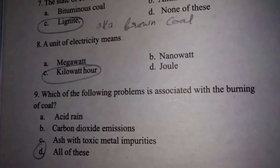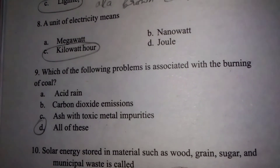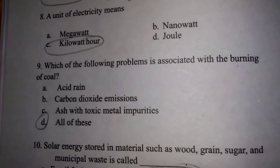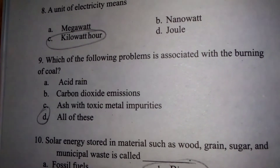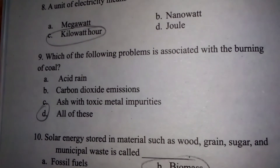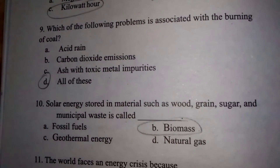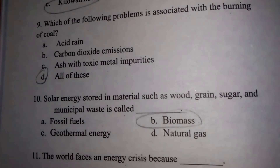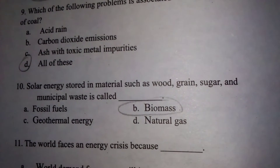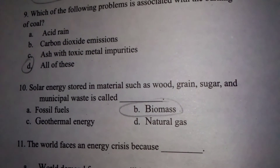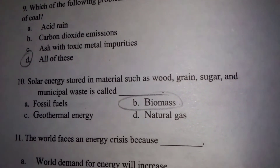Which of the following problems are associated with burning coal? Carbon dioxide emissions, release of toxic metal impurities, and acid rain — all of these occur. Solar energy stored in material such as wheat, grain, sugar, and municipal waste is called biomass.